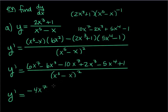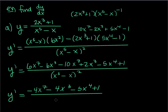Combining like terms, we get negative 4x to the 7th minus 5x to the 4th plus negative x cubed plus 2x, all over x to the 5th minus x quantity squared. The commutative law of addition means order doesn't matter, but this is my final simplified answer.